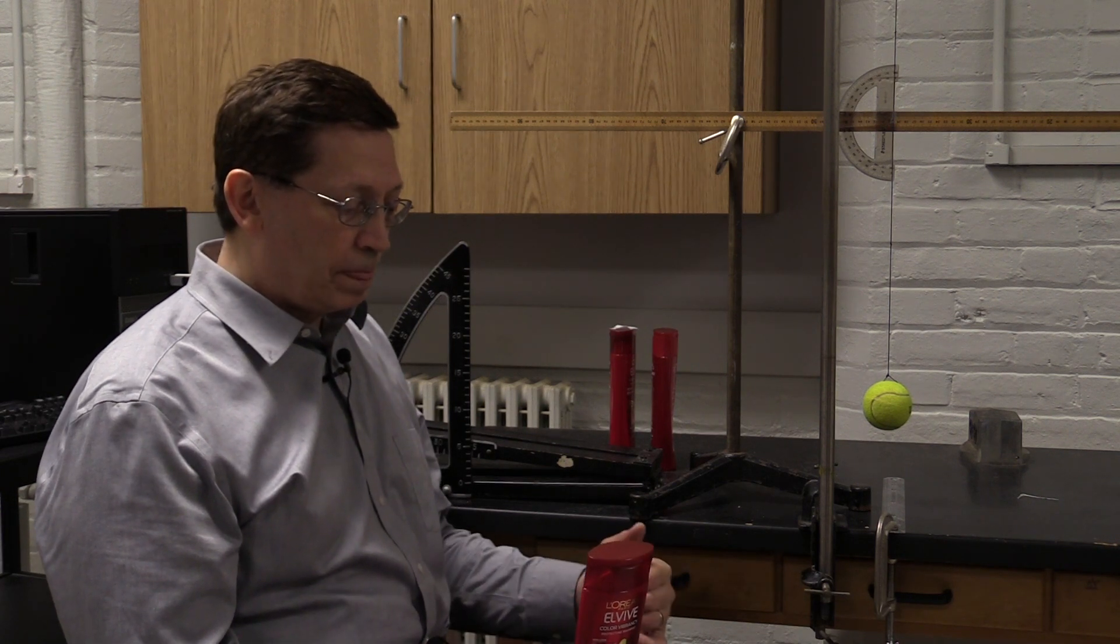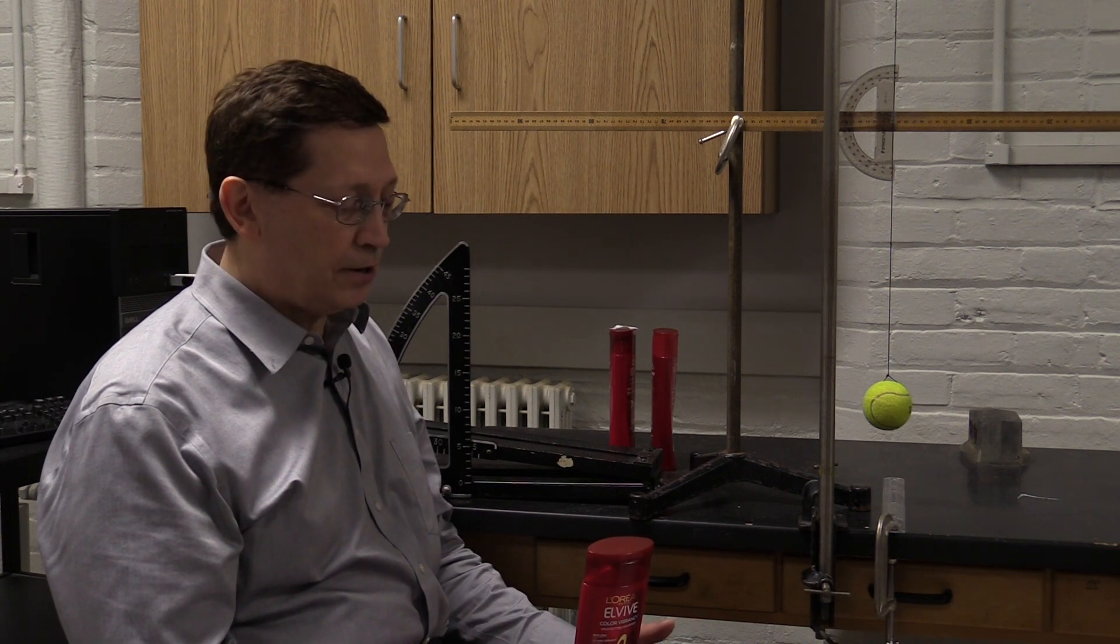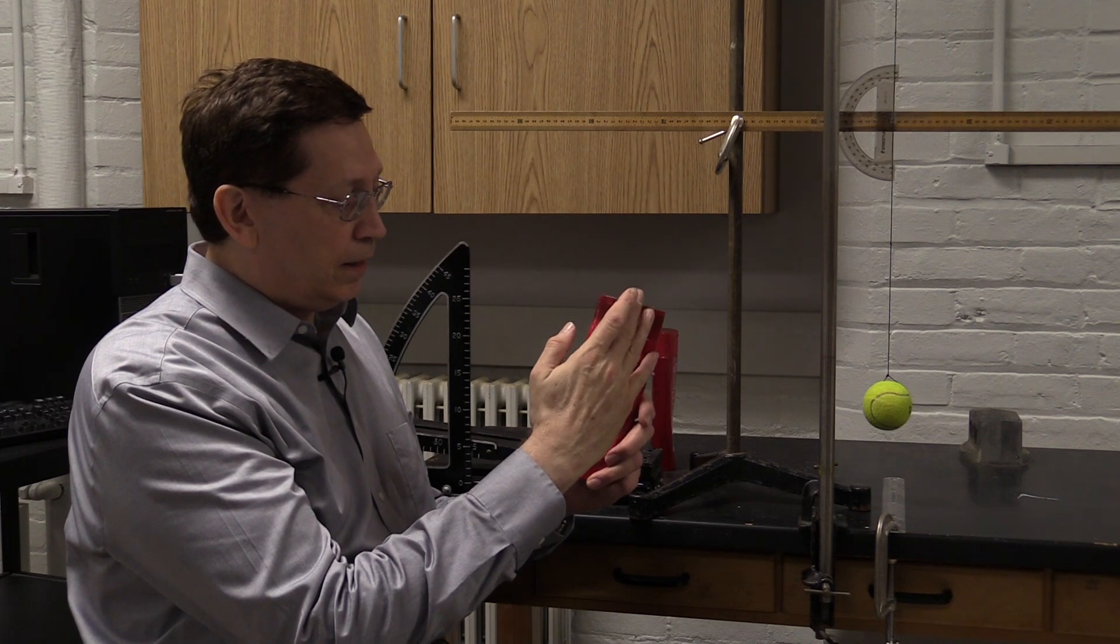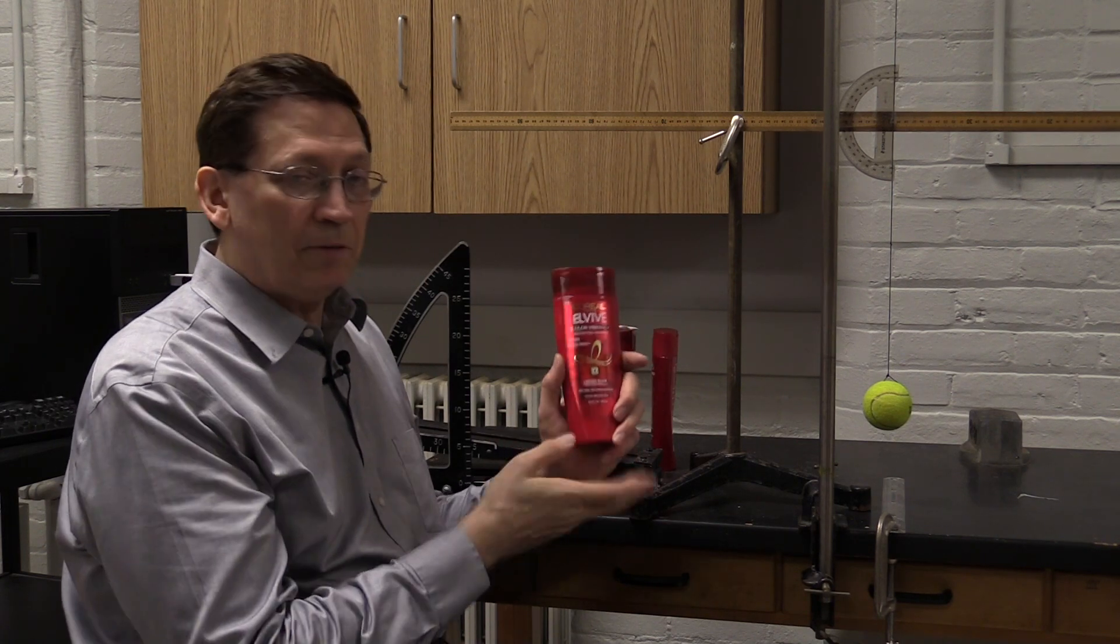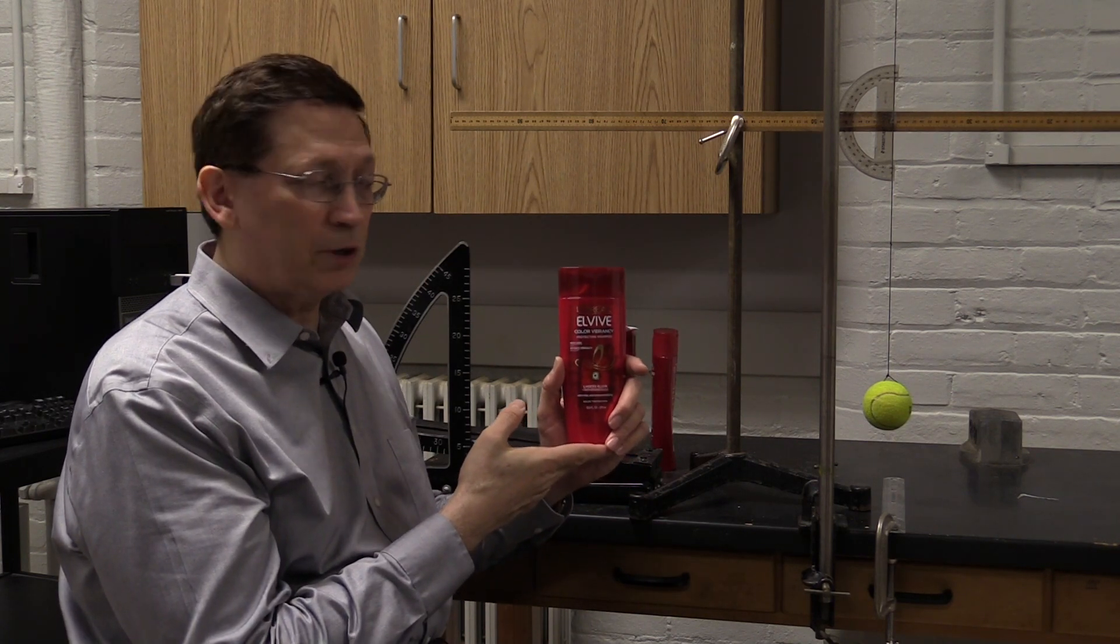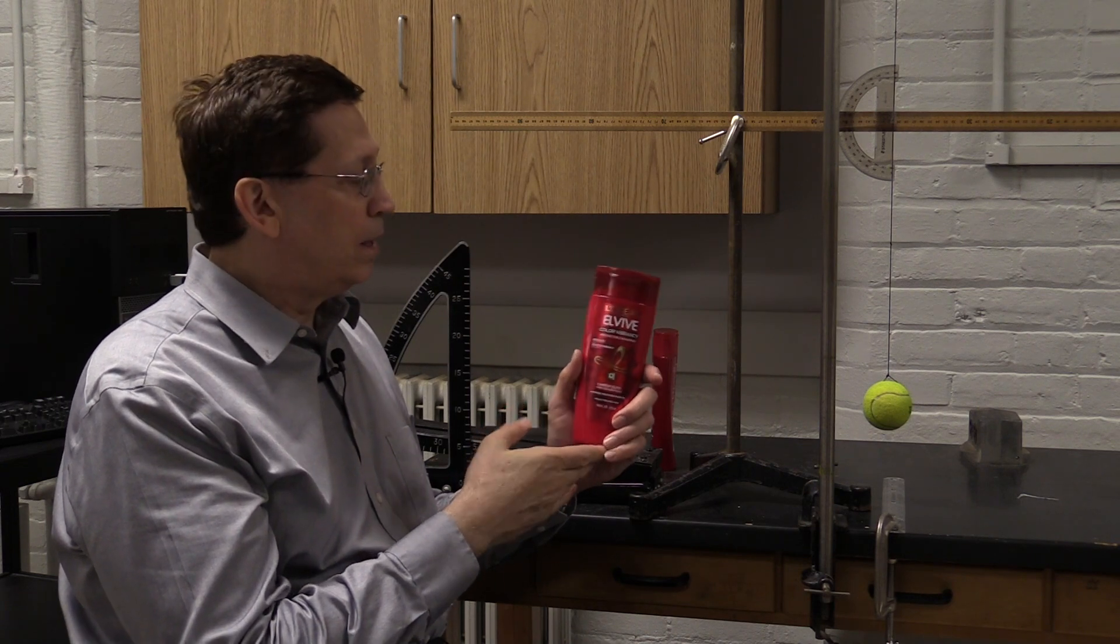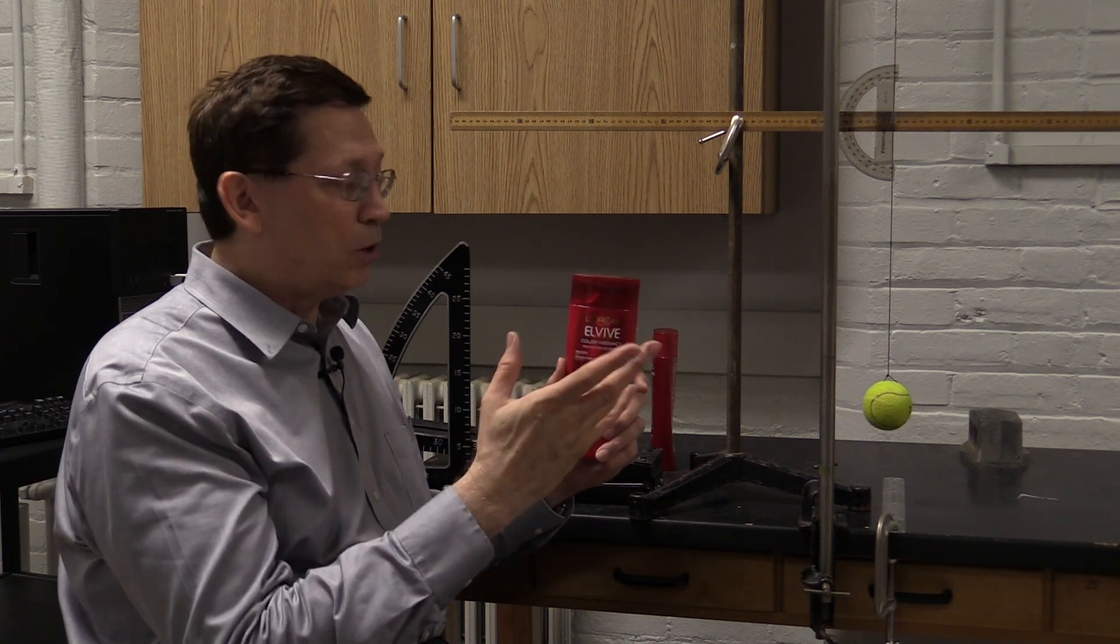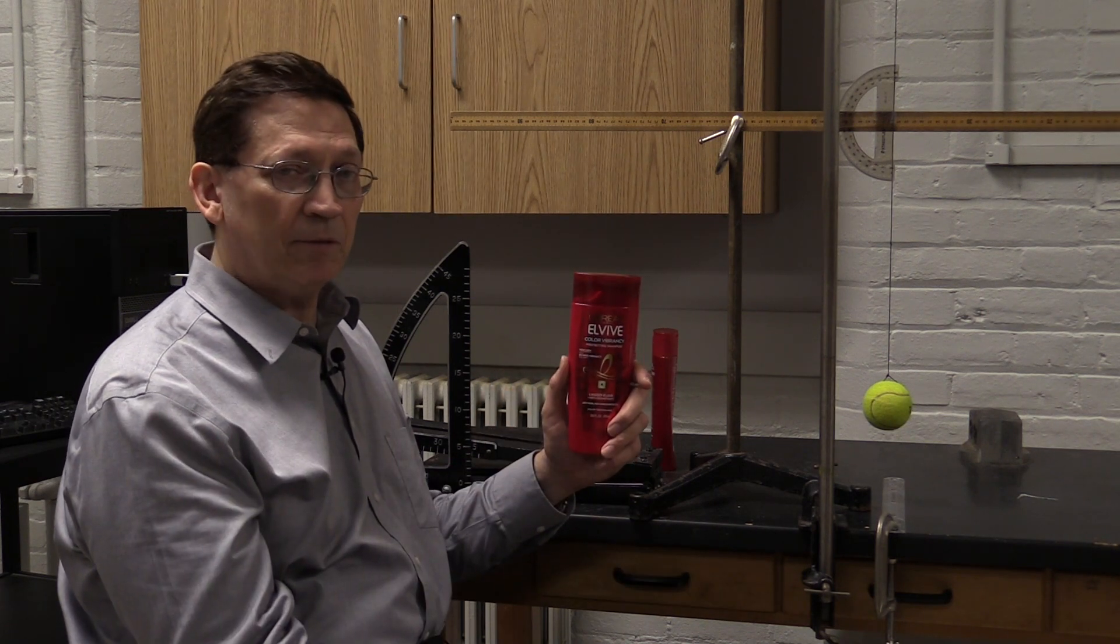The physics of that is pretty interesting and easy to understand. The mass of an empty shampoo bottle was about 40 grams. The mass of the liquid inside is about 340 grams. So most of the mass is the mass of the liquid.